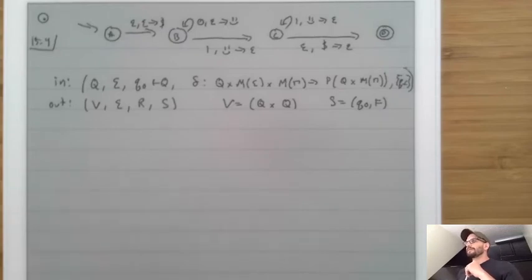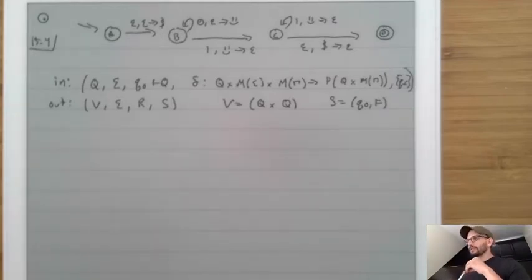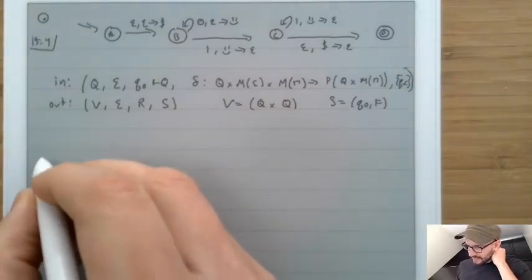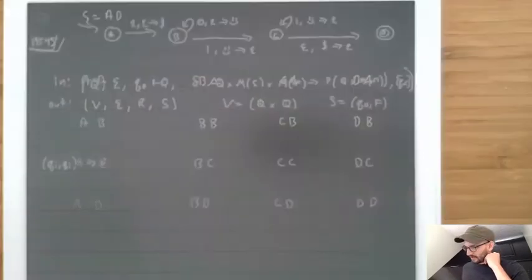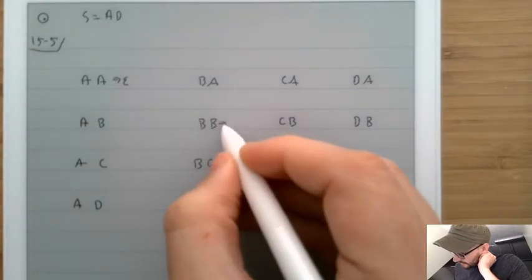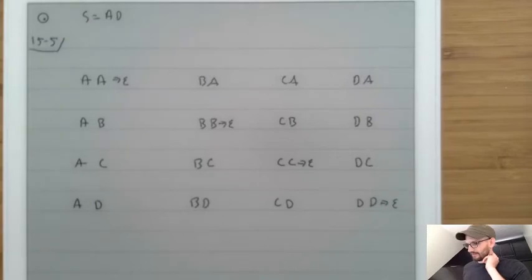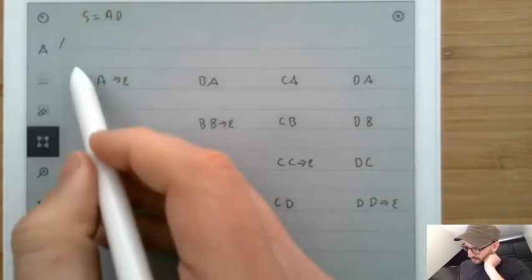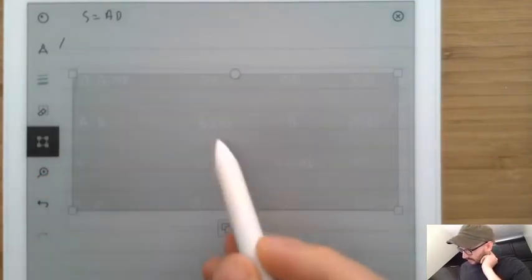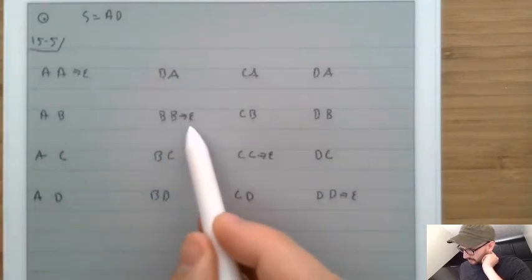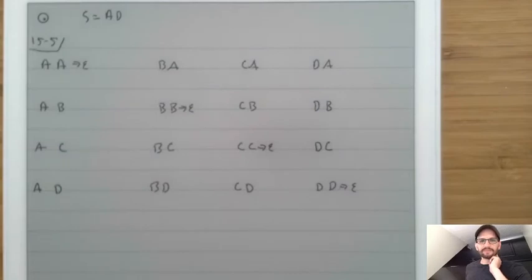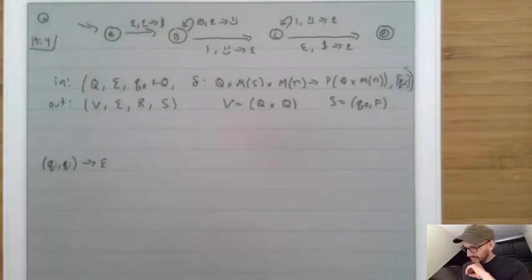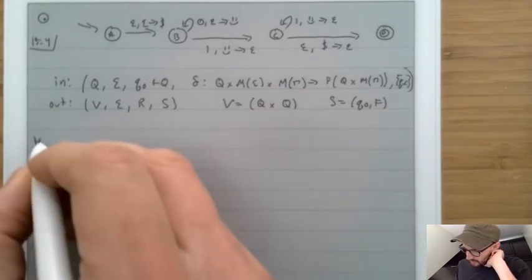So now all we need to do is say what the rules are. There are three categories. The first rule is that Qi, Qi goes to epsilon. So AA goes to epsilon, BB goes to epsilon, CC goes to epsilon, and DD goes to epsilon — for all Qi inside Q.